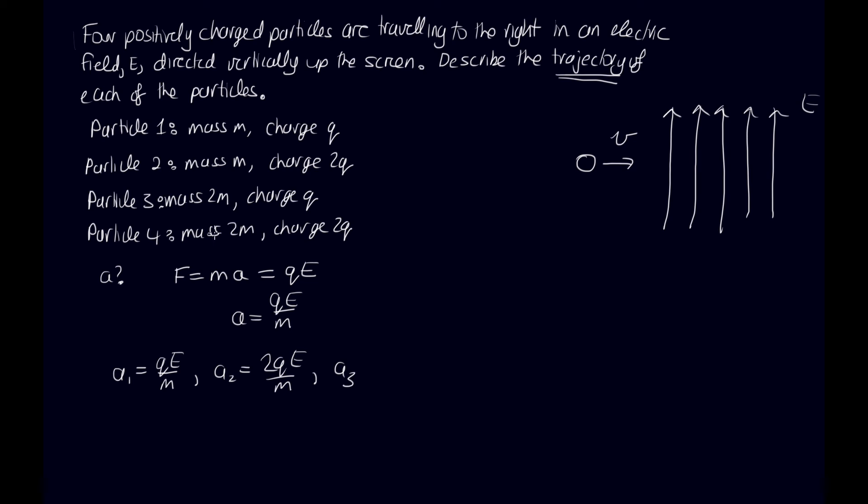For particle 3, we've got a mass of 2m and a charge q. So this is going to be equal to qe divided by 2m. And a4, we've got a mass 2m and a charge 2q. So this will be 2qe on 2m. So those 2s will cancel, and we'll end up with qe on m.